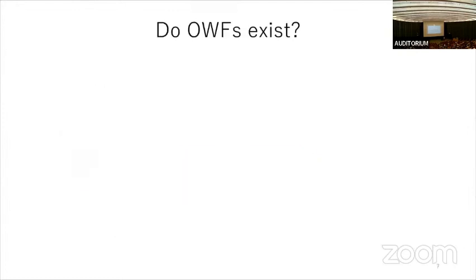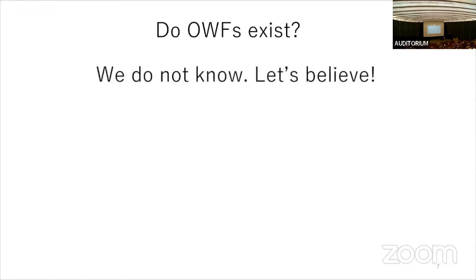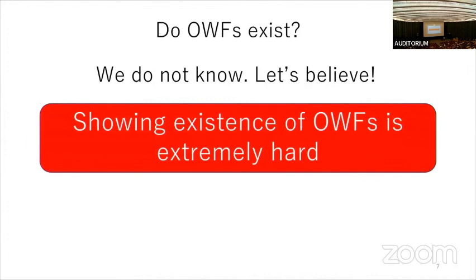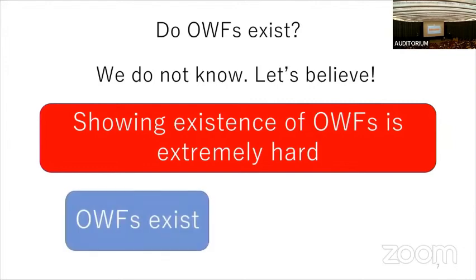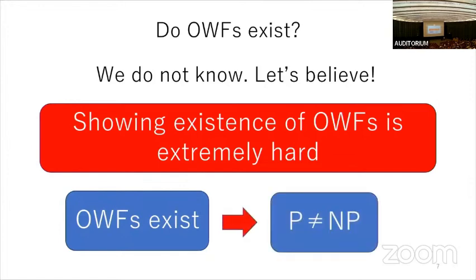The question is: do one-way functions exist? This is just an assumption — there is no proof that one-way functions exist, so we just assume they do. Showing existence of one-way functions is extremely hard, because if you can show a one-way function exists, you can also show P is not equal to NP, which solves a long-standing open problem in computer science. That's why we simply have to assume one-way functions exist.